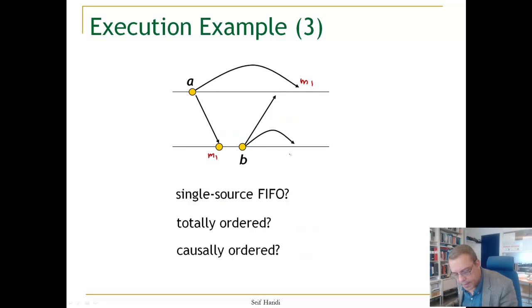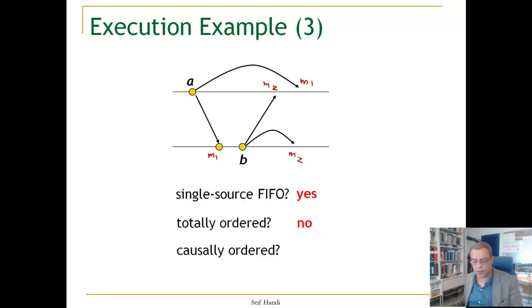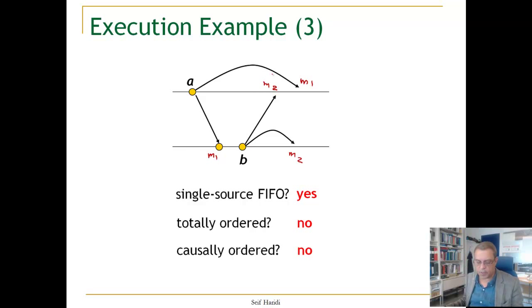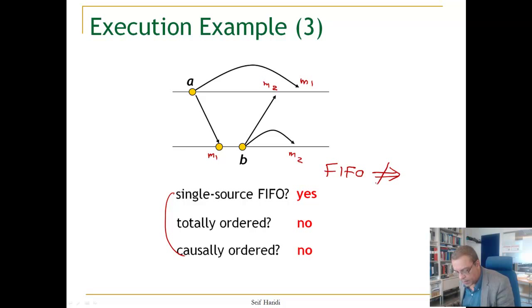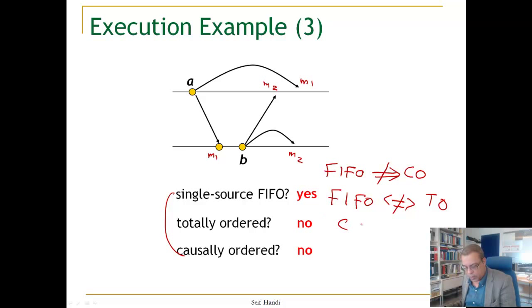Here is M1 and here is M2. Is this FIFO order? The answer is yes — there is only one message from each source. Is it totally ordered? The answer is no. Is it causally ordered? The answer is no, because message M2 is causally after M1 but is delivered before M1. So FIFO does not imply causal order. We know FIFO is not comparable to total order, and causal order is not comparable to total order, but causal order implies FIFO.